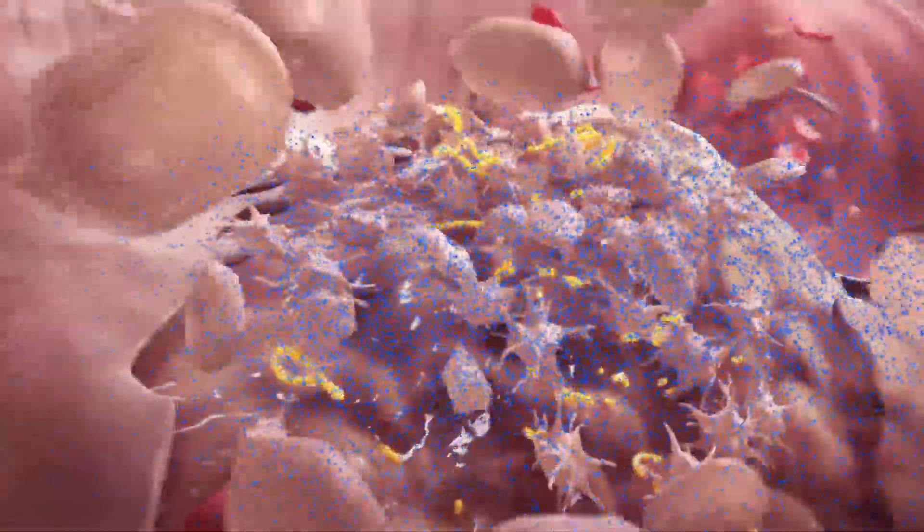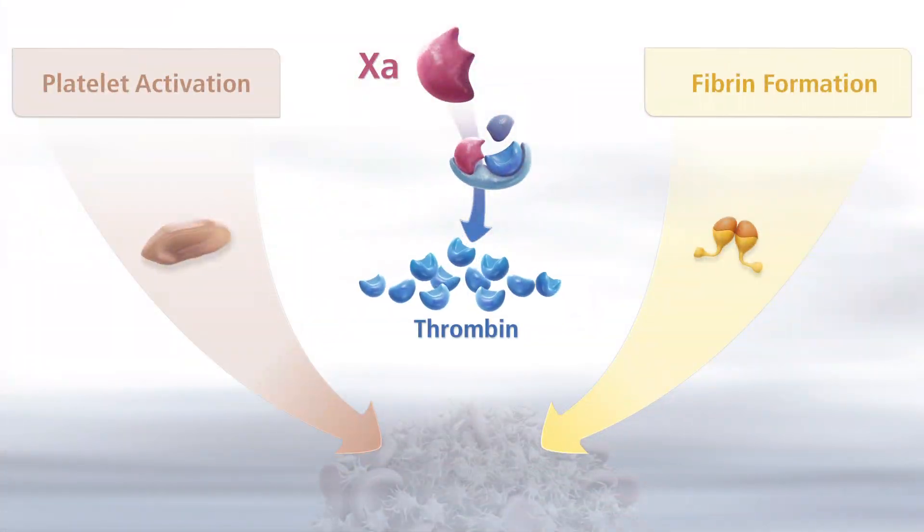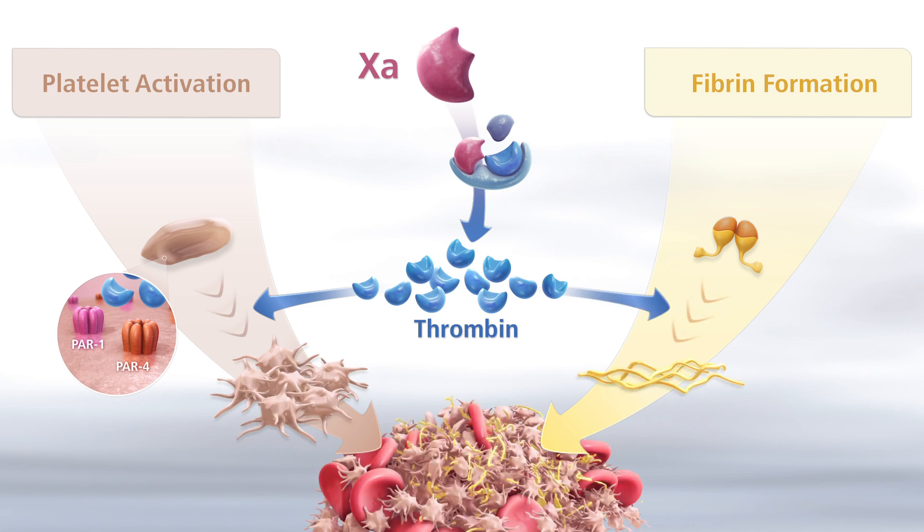This activation doesn't only happen in the blood flow, but occurs predominantly on the plaque surface. Because of thrombin's effects on platelets and fibrin, it offers a specific therapeutic target for the inhibition of arterial clot formation.